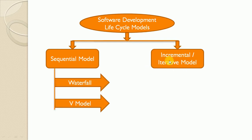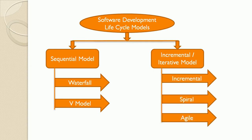In the Incremental Iterative model, the complete software requirements get divided into multiple modules and, as per the requirement, software gets produced in multiple iterations. Best examples for incremental or iterative models are Incremental Model, Spiral Model, and Agile Model. In the previous tutorial, I have already discussed Waterfall Model, Incremental Model, and Spiral Model in detail. Please refer to the previous tutorial for more information, and in this tutorial let's understand what V-Model is.